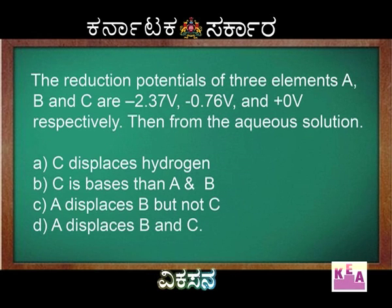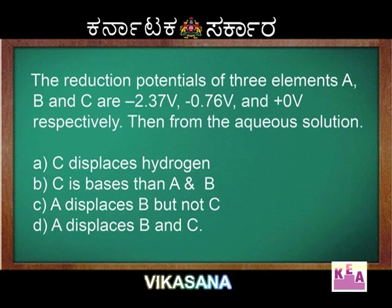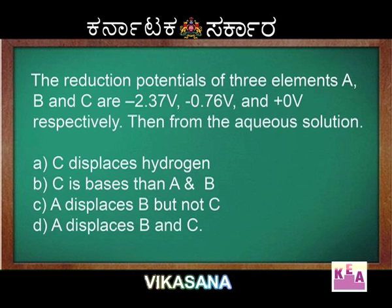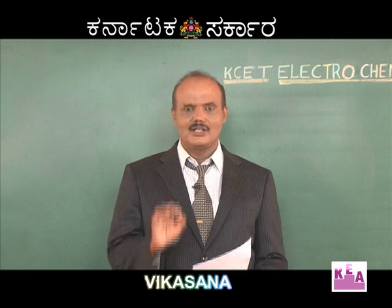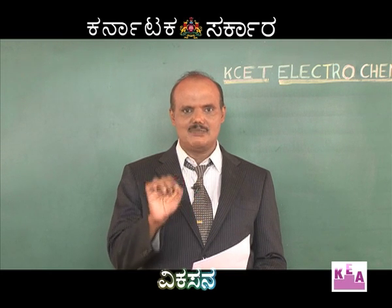Next question: the reduction potentials of three elements A, B, and C are minus 2.37 volts, minus 0.76 volts, and 0 volts respectively. A has less SRP than B and C. As stated, a less SRP element is more reactive. Therefore, A is more reactive than B and C, so A displaces B and C.